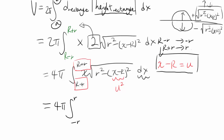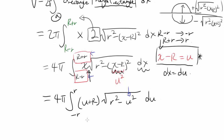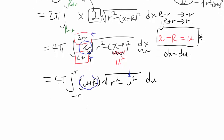With u = x − R, we have x = u + R, so (x − R)² becomes u², and dx = du. Substituting in, x becomes (u + R), and the integral becomes 4π times the integral from −r to r of (u + R)√(r² − u²) du. The substitution accomplished two things: simplified the integrand and the bounds.